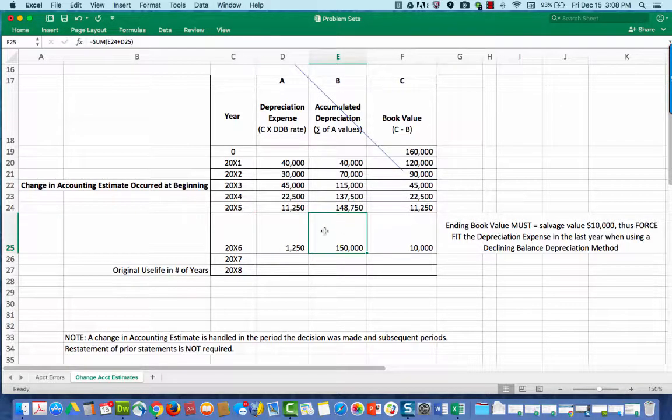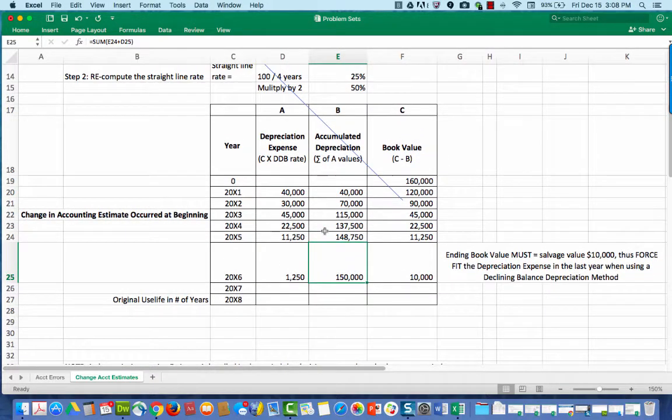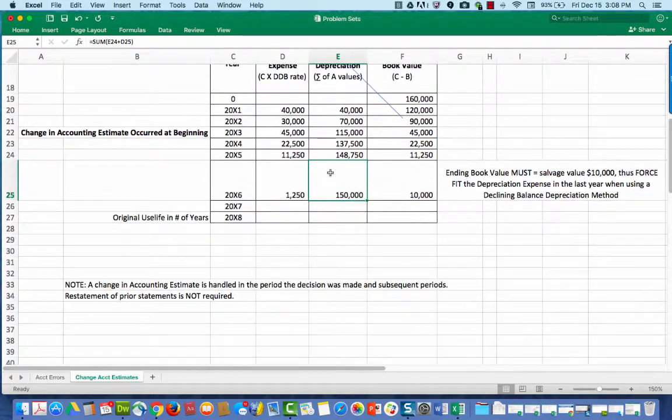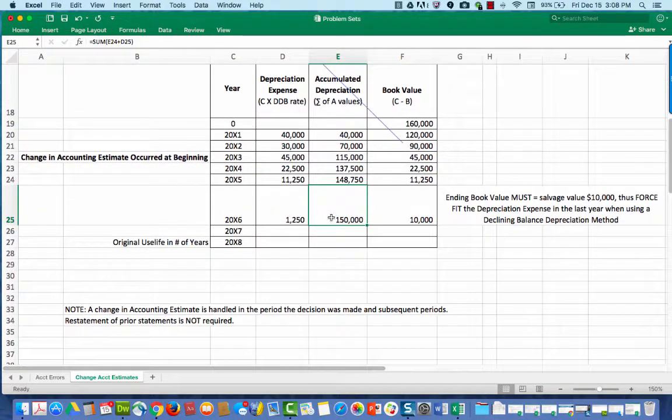When I add all of these figures up, it brings me total accumulated depreciation of $150,000. And if you remember, from the very beginning, the cost of the asset was $160,000 and the salvage value is $10,000. Therefore, I can depreciate the $150,000. That's the maximum that can be depreciated. So we have the maximum accumulated depreciation of $150,000. And that leaves us with an ending book value of $10,000, which is the salvage value.